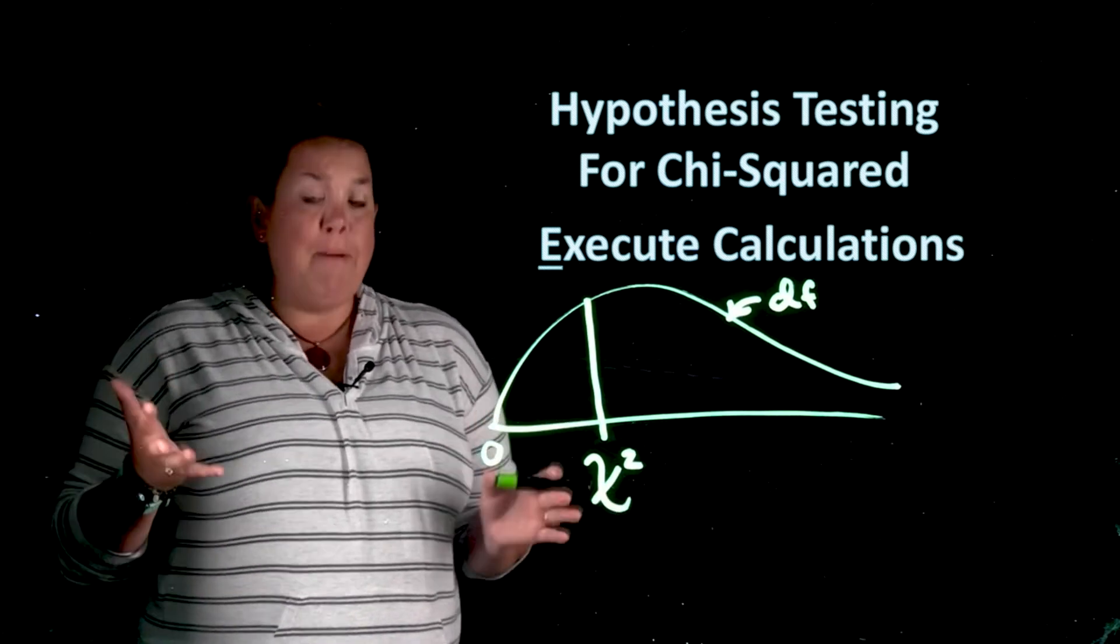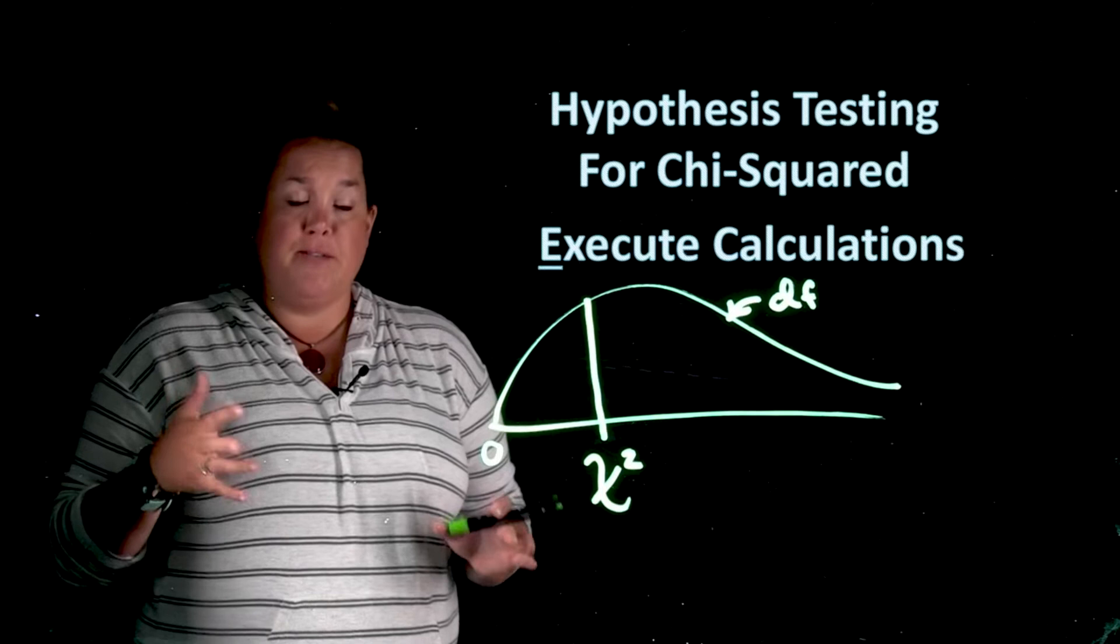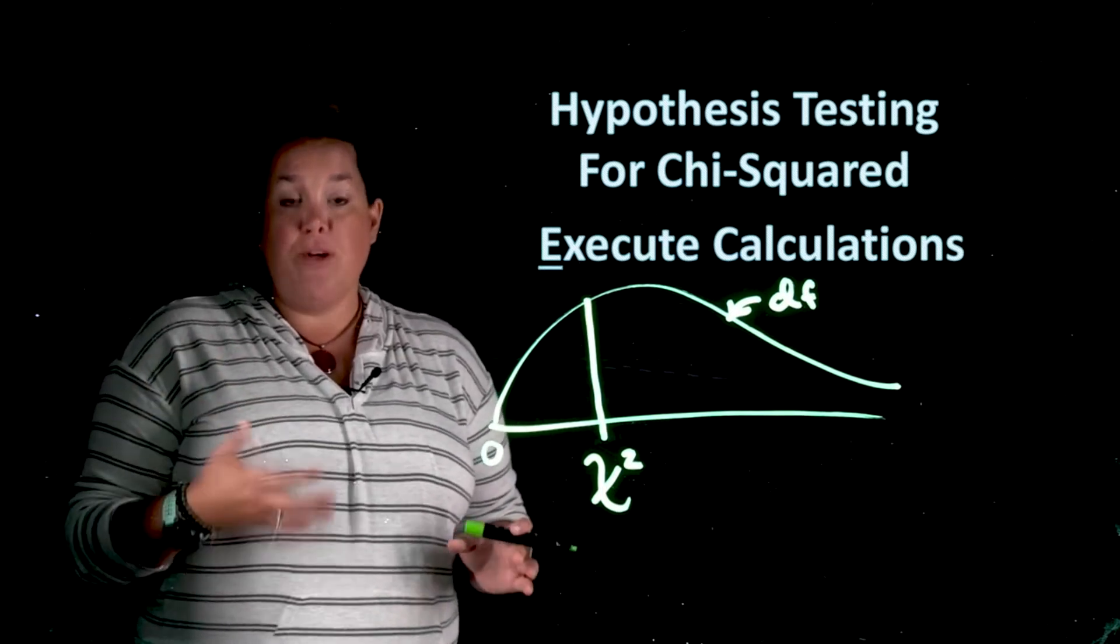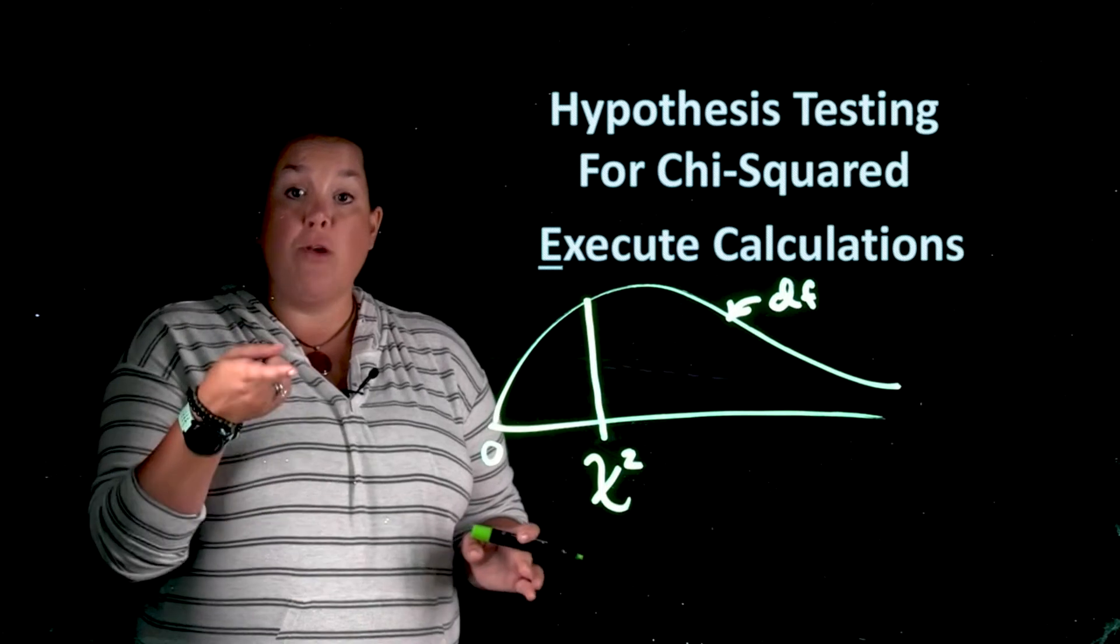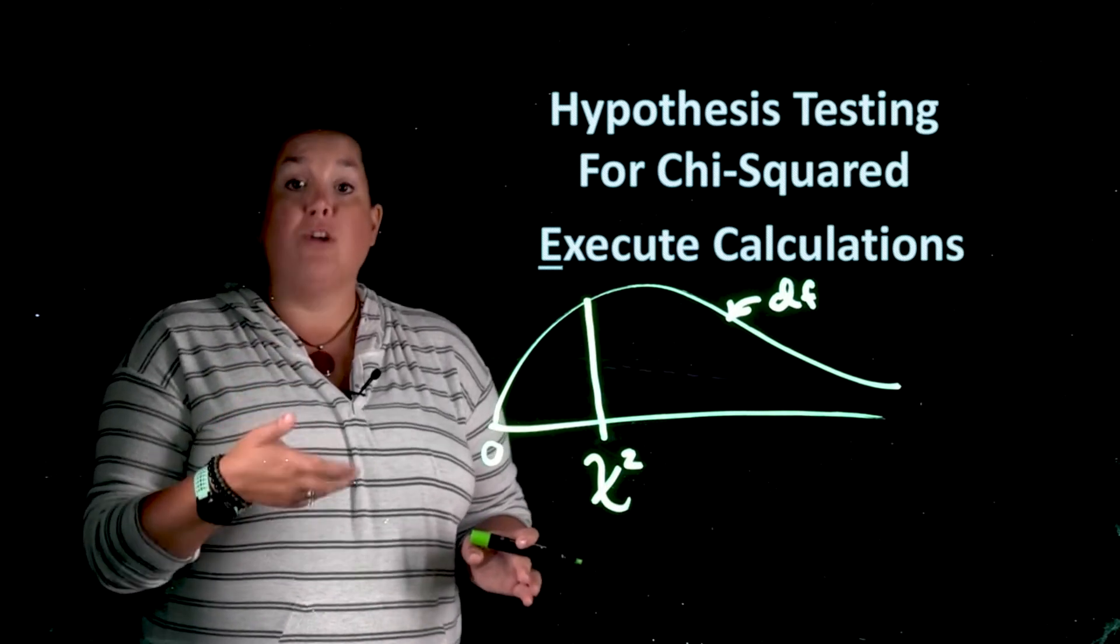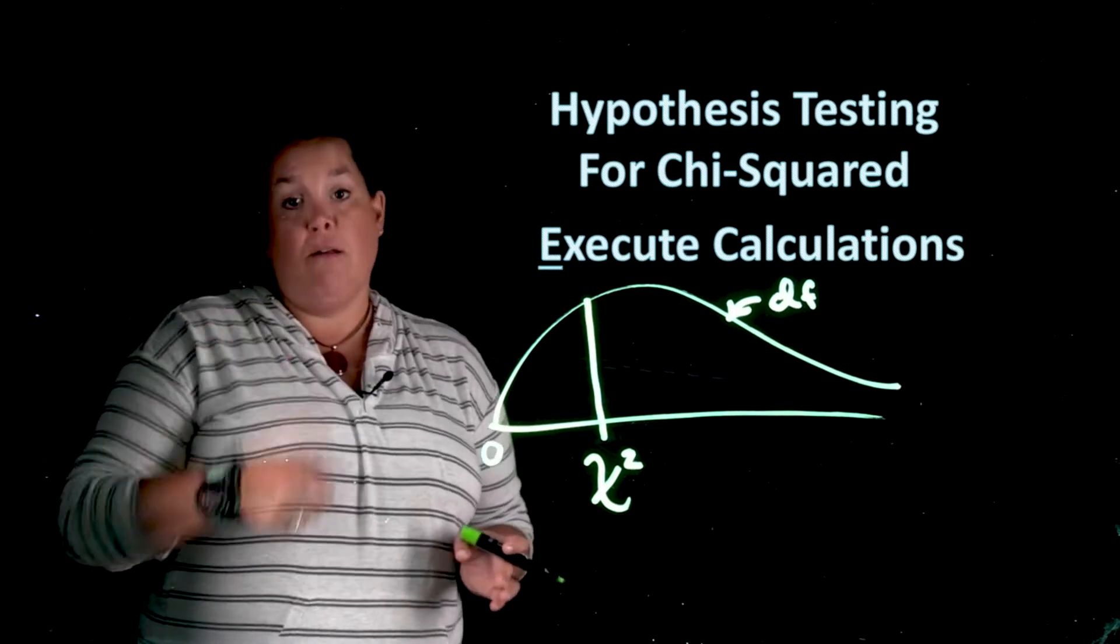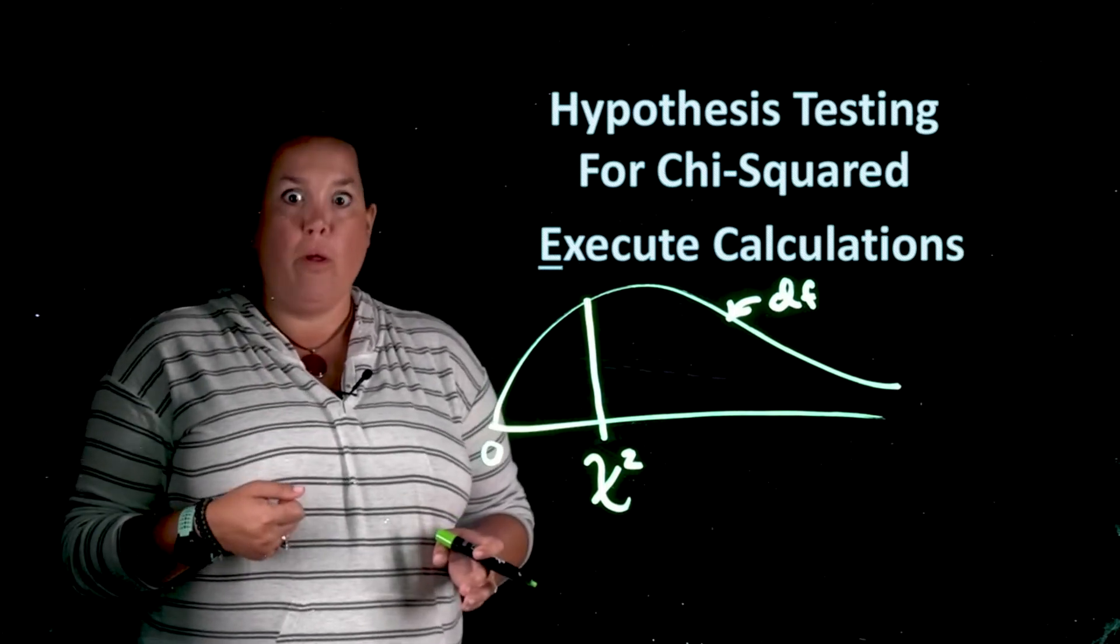Now the measurement that we're talking about in today's video is something called a p-value. A p-value is the probability of finding what you did from the sample or something more extreme, assuming that the null hypothesis is true. That's a lot, right?